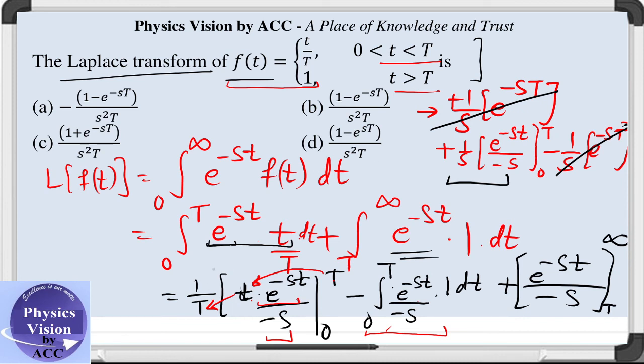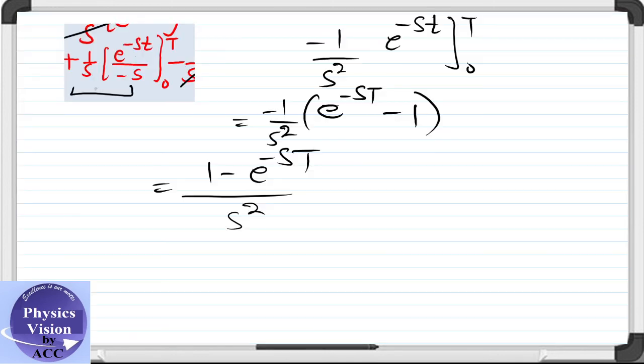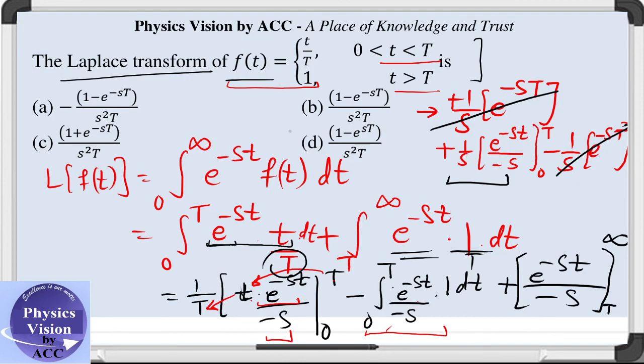No, there is one more factor that 1 by T was outside the whole bracket of everything. So, we need to take 1 by T here and here as well. There will be 1 by T here, so here, so here and so here. So this is the final result which is option D.